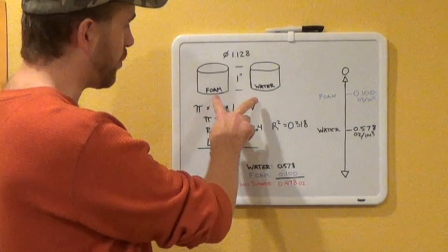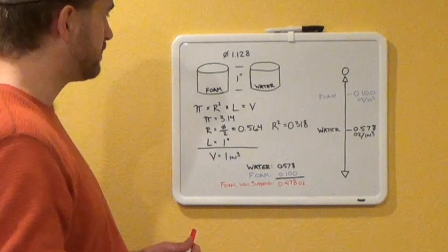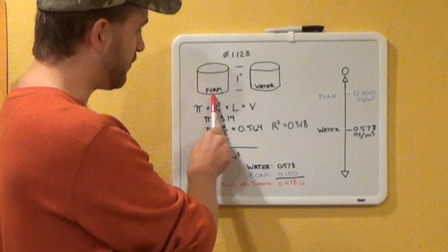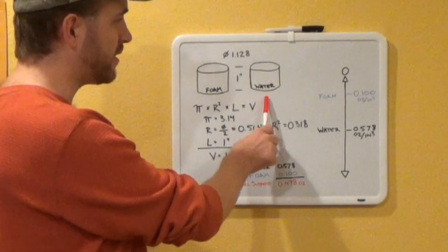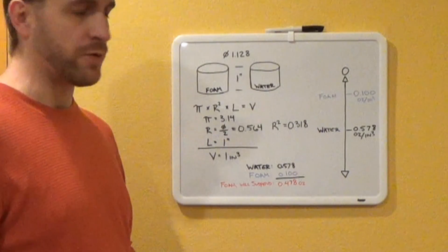So up on our left of our whiteboard here, we have two volumes that are identical, two cylinders. We have one that we've called foam, one that we've called water. The foam, obviously, we're talking about fishing bobbers, so that's why we brought that in.